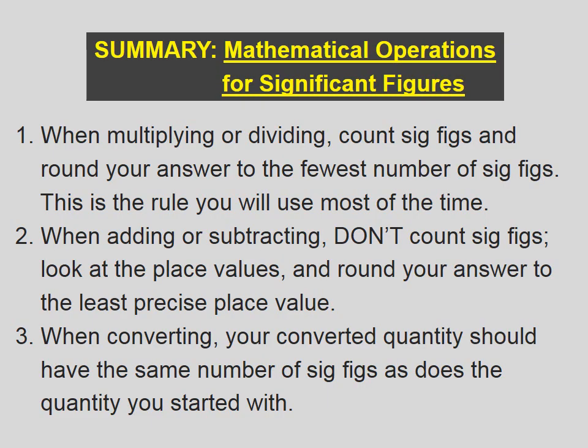Let's summarize mathematical operations for significant figures. When multiplying or dividing, count sig figs and round your answer to the fewest number of sig figs. This is the rule you will use most of the time. When adding or subtracting, don't count sig figs. Look at the place values and round your answer to the least precise place value. And finally, when converting, your converted quantity should have the same number of sig figs as does the quantity you started with.